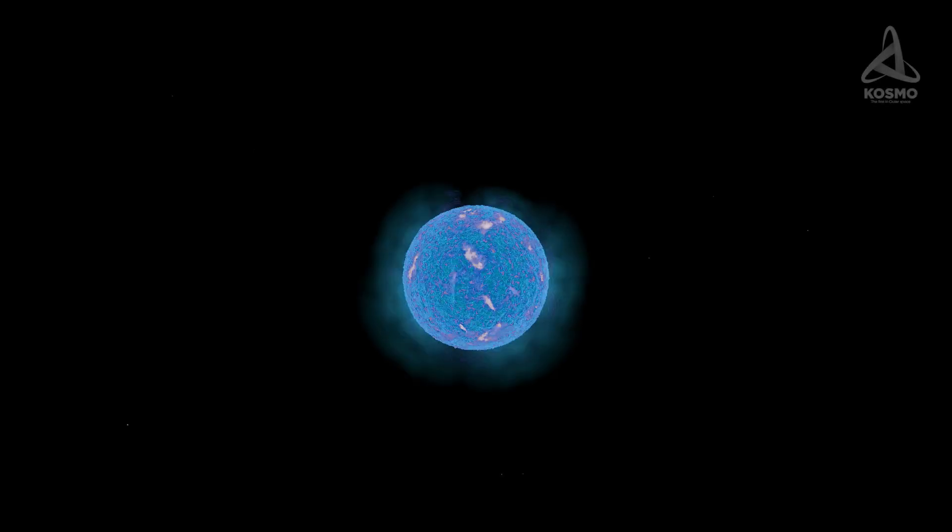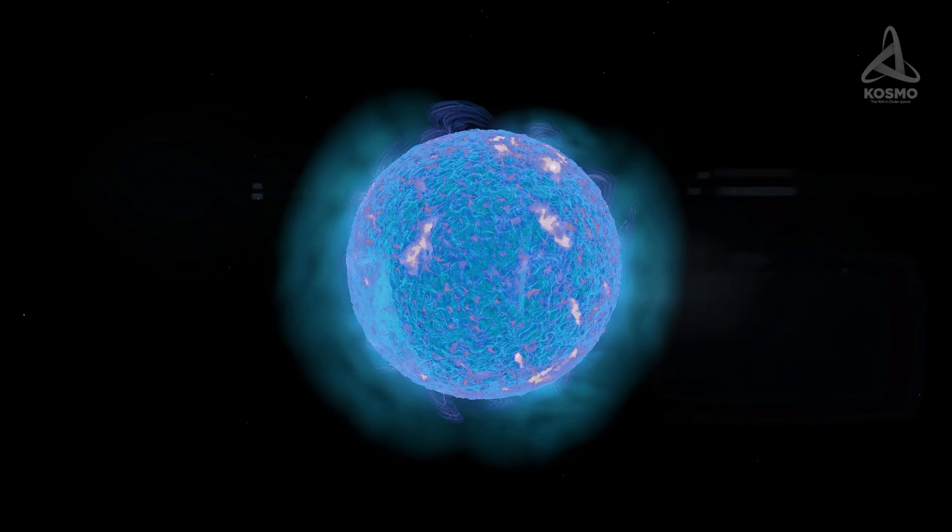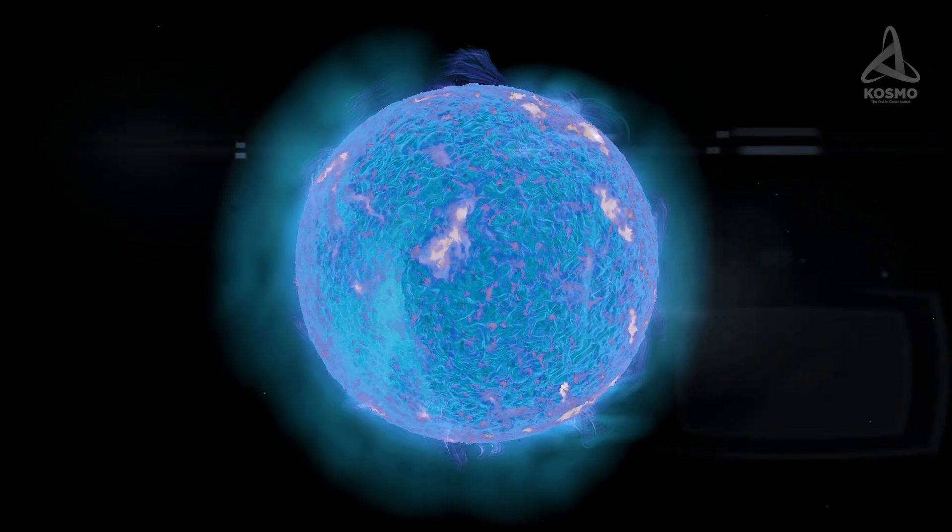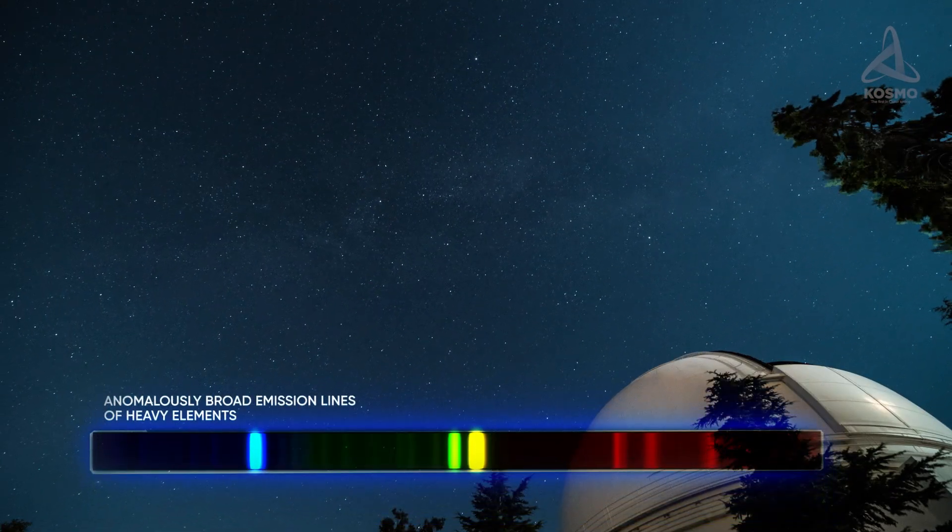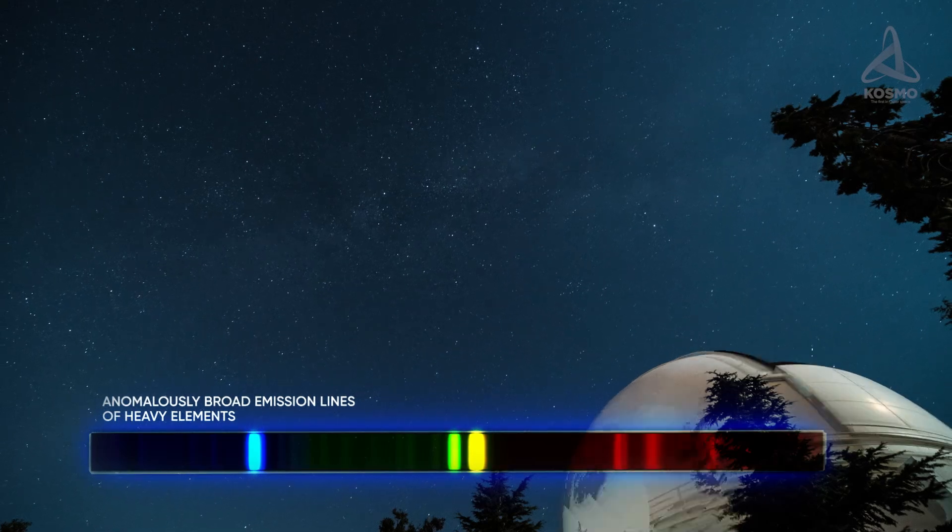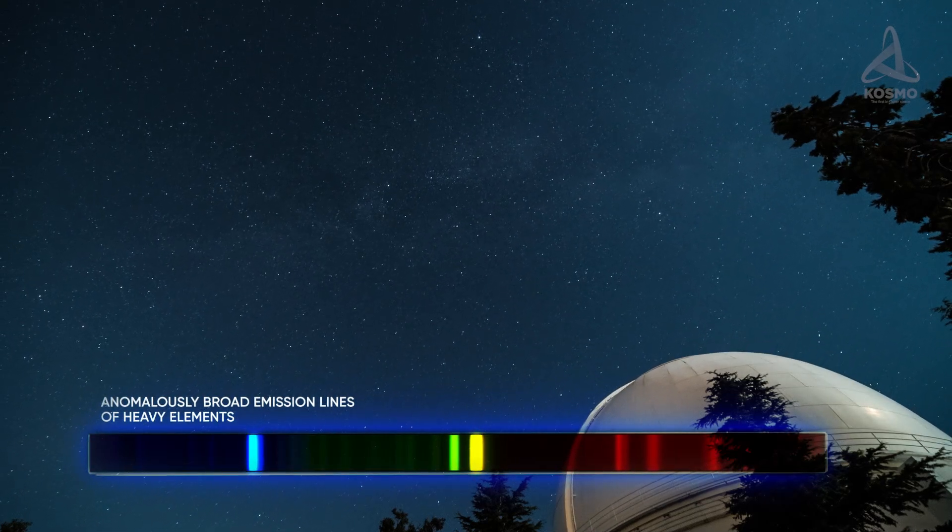This class of space objects was discovered back in 1867 by the French astronomers Charles Wolf and George Rayet. The scientists' attention was caught by anomalously bright emission lines of heavy elements in these stars' spectra.